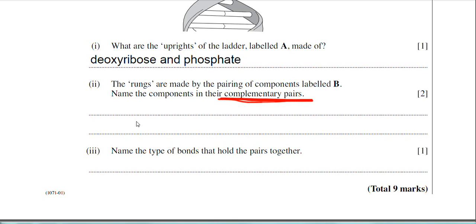So the pairing is adenine and thymine. And if you remember from my notes, adenine and thymine sort of spell out AT. And the other base pairs are G and C. So that's an easy two marks there for that part.